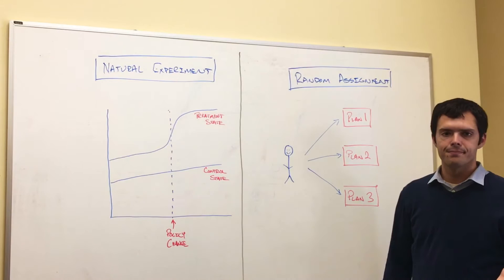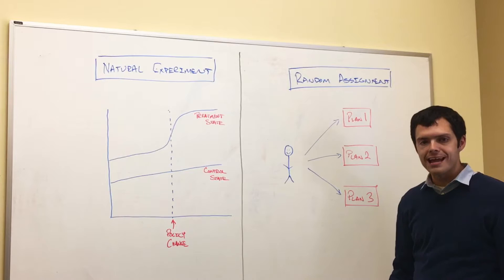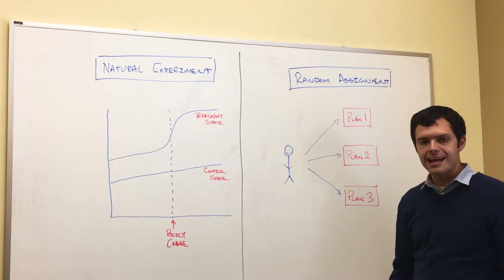Second, there's also a feature of many state Medicaid programs that represents the holy grail of academic research. States often randomly assign Medicaid enrollees to different forms of Medicaid coverage. Random is the magic word here.